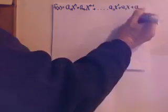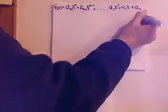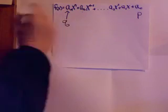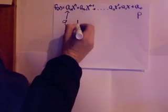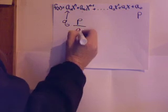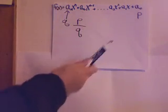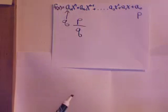One thing to do is to take the constant coefficient which we call p and the leading coefficient which we call q and do a list of factors of p over q. Those factors, all of them, are possible answers to the polynomial.